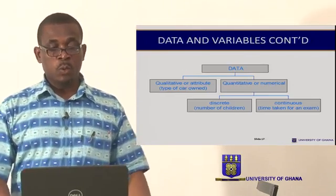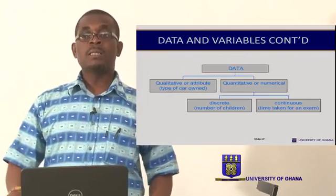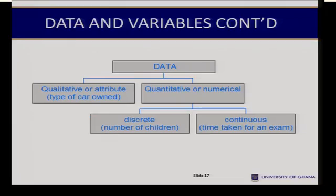This diagram summarizes the types of data. As indicated earlier, when you take data, it could be either qualitative or quantitative. Quantitative data, in turn, is grouped into discrete or continuous.